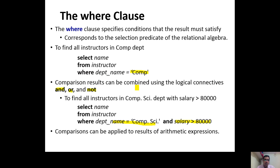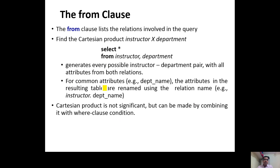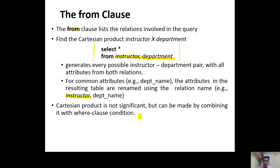The FROM clause lists the relations involved in the query, and you can invoke more than one table. A query with SELECT * FROM INSTRUCTOR, DEPARTMENT performs a Cartesian product — it combines all results and generates every possible instructor-department pair with all attributes from both relations. For common attributes like department name, the result uses the relation name, e.g., instructor.department_name. The Cartesian product alone is not very useful, but it becomes significant when combined with a WHERE clause using a natural join condition.